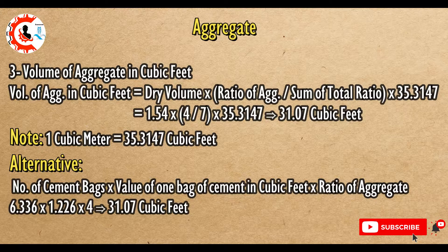Note: 1 cubic meter equals 35.3147 cubic feet. Alternative method: number of cement bags multiplied by volume of one bag of cement in cubic feet, multiplied by ratio of aggregate. 6.336 × 1.226 × 4 equals 31.07 cubic feet.